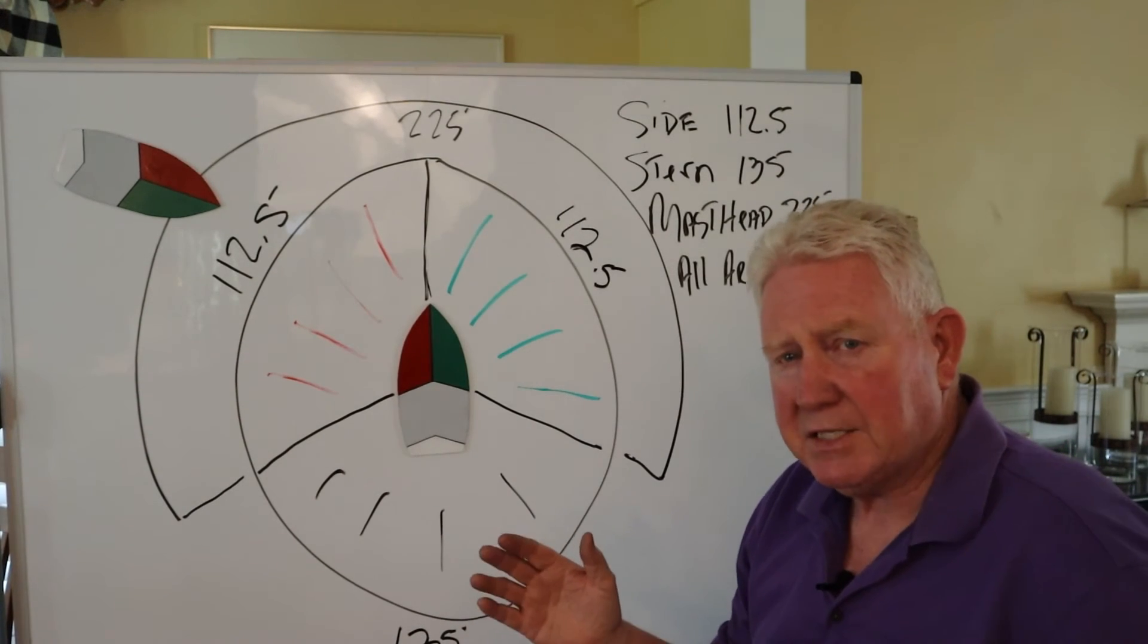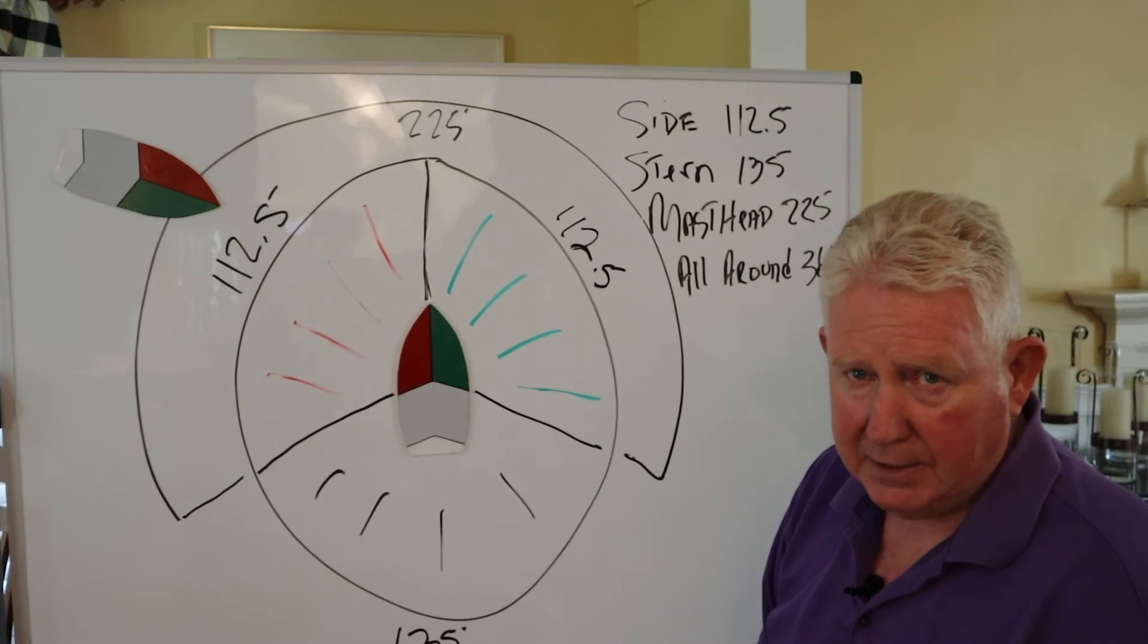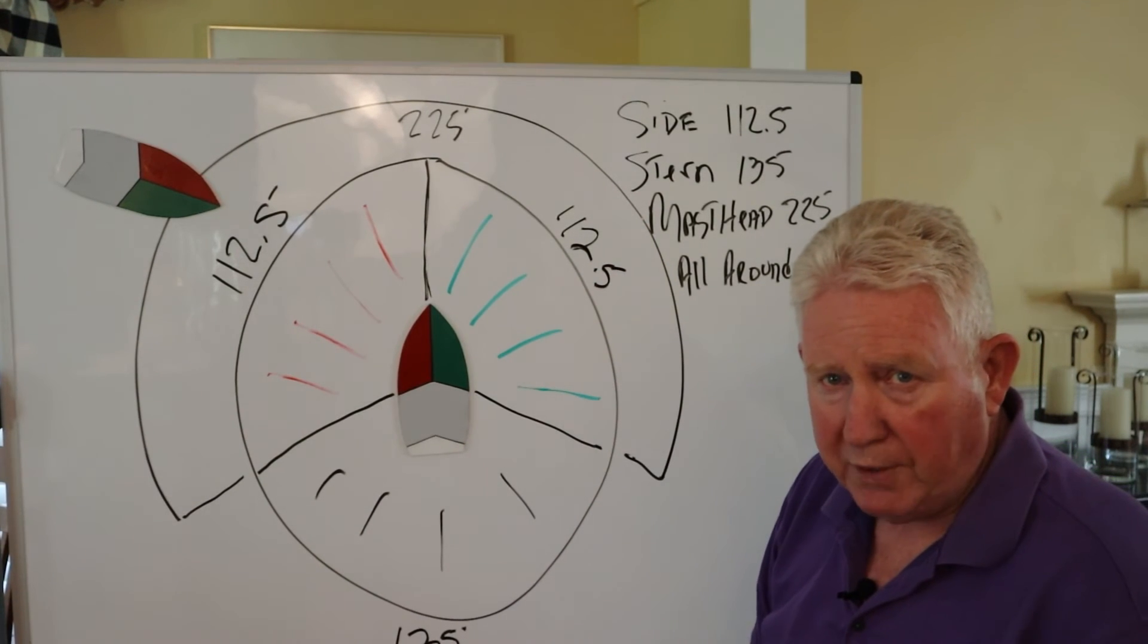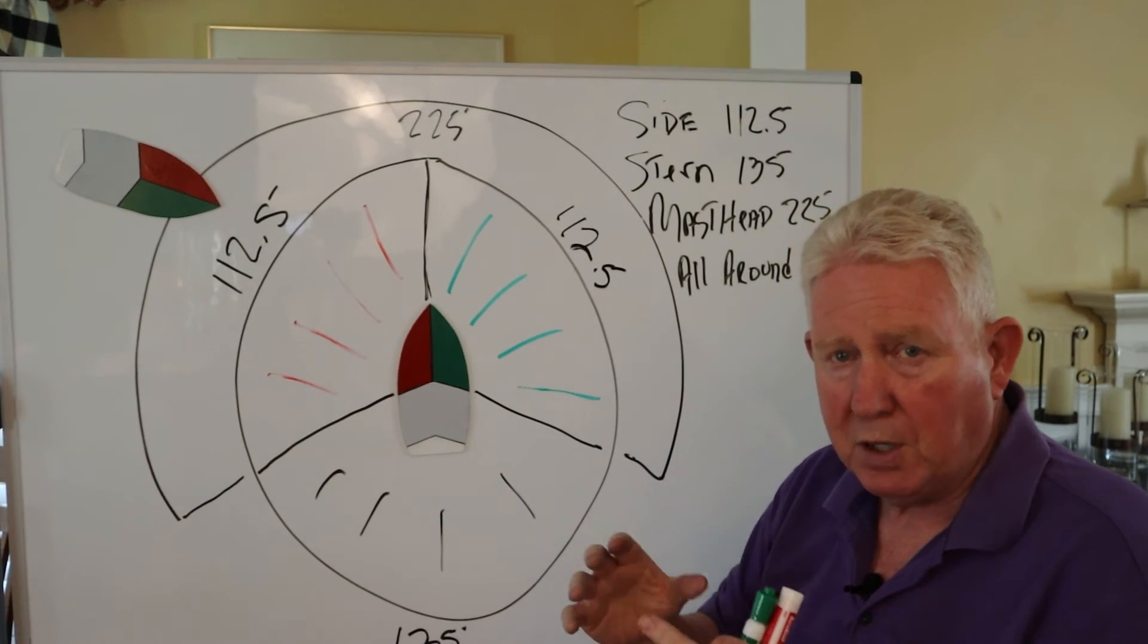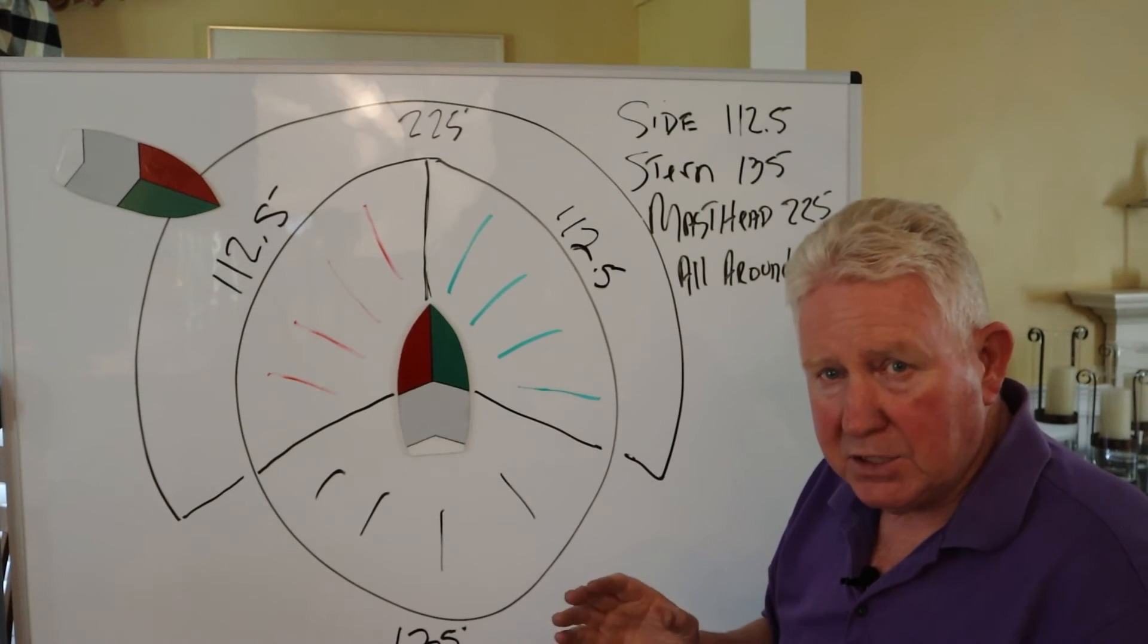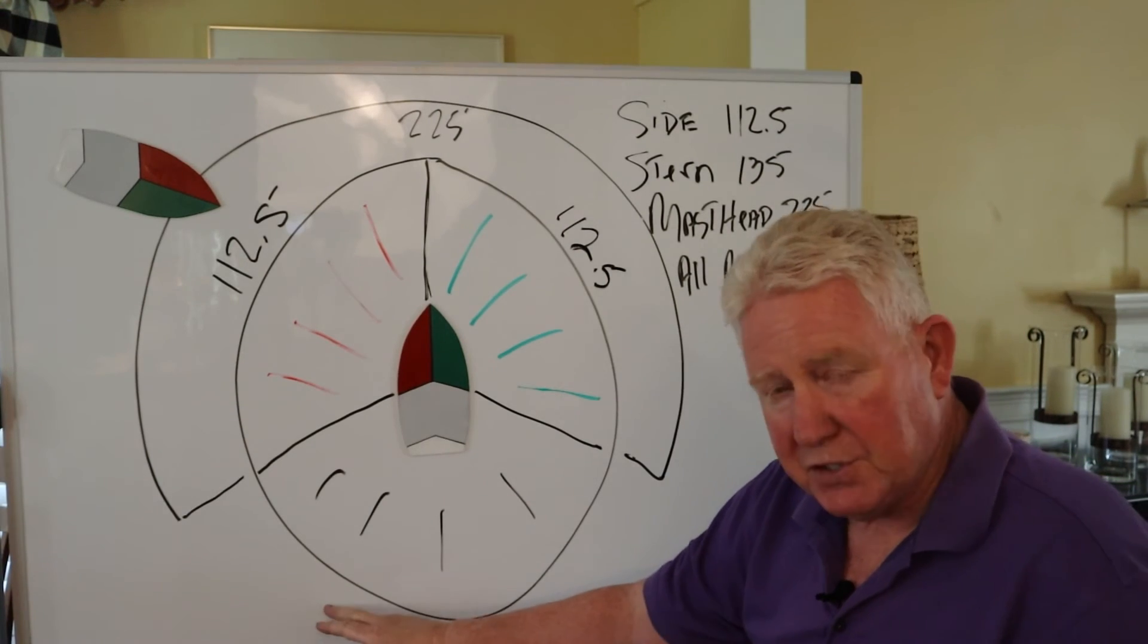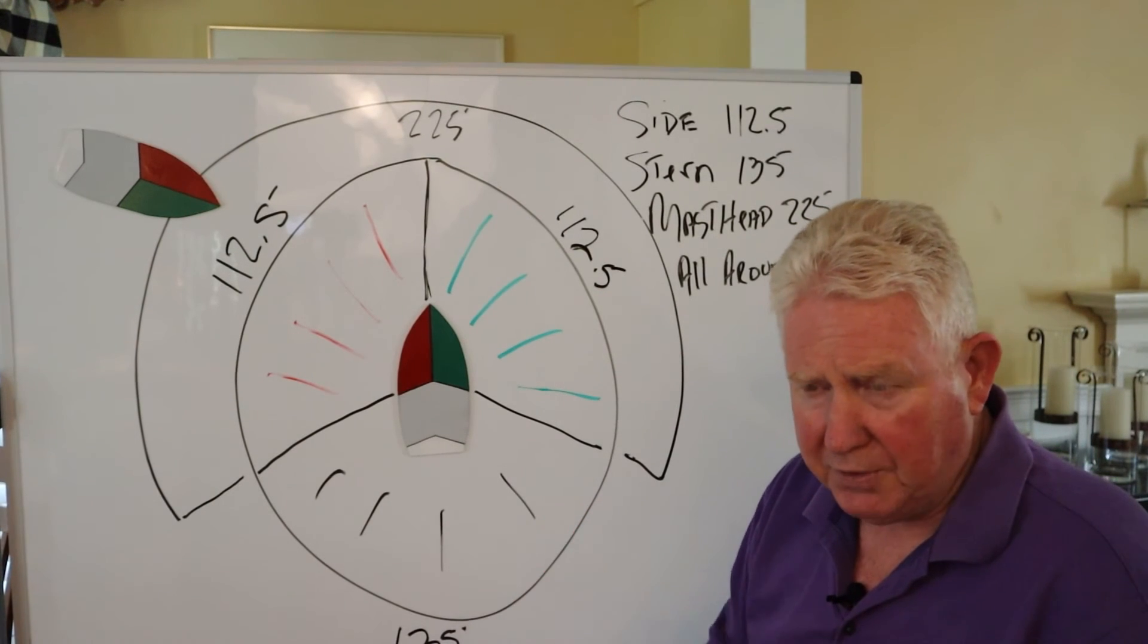A vessel less than 50 meters is required to show one masthead light at 225 degrees. What most boat manufacturers do is just put one white all-around light, and it satisfies the requirement of the stern light and the masthead light.